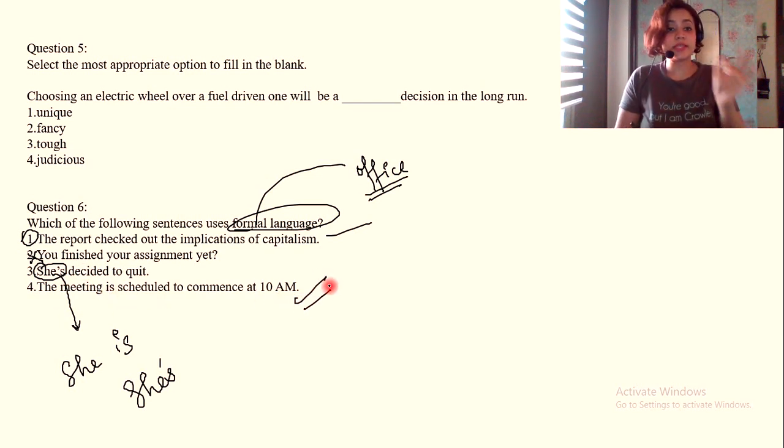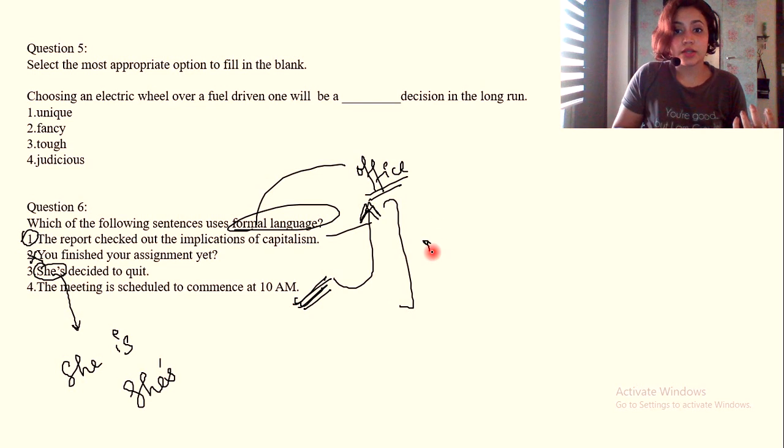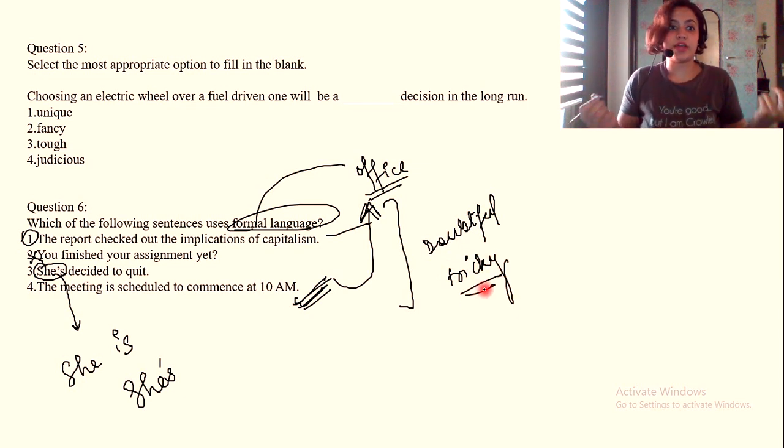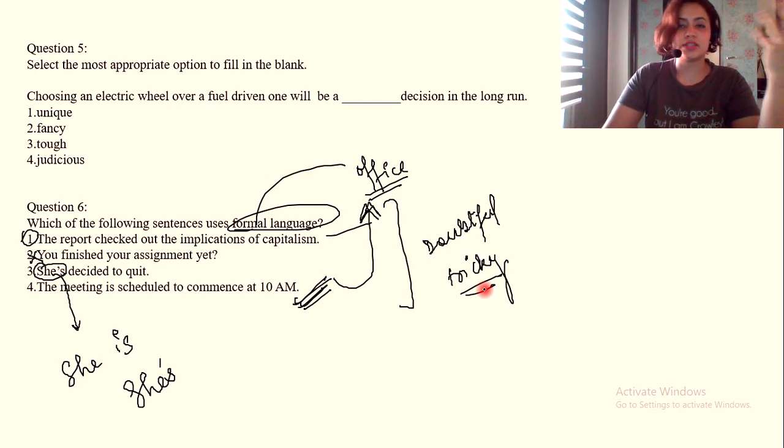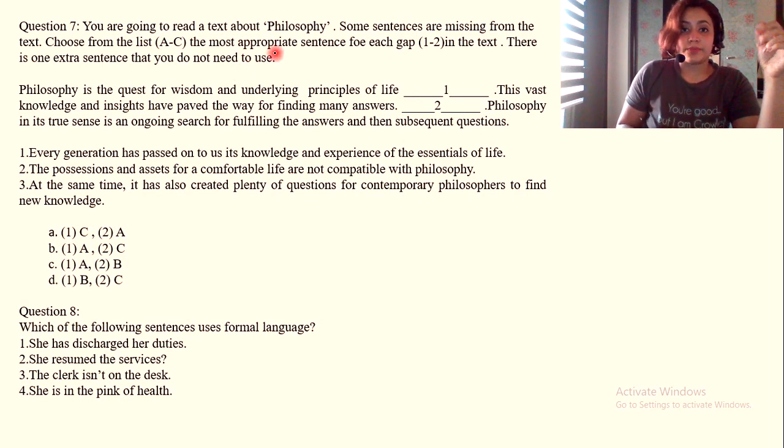She's decided to quit. Mind you, these abbreviations when you don't write she is but do it like this, she's, these abbreviations are generally used in an informal way. The meeting is scheduled to commence at 10 a.m. The answer is fourth or D, not A. This is most apt for office language, but this one is doubtful and tricky because I'm confused between one and four.